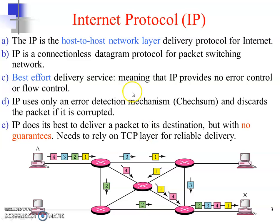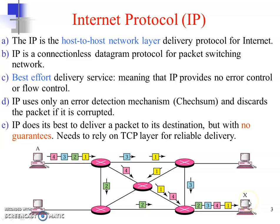Internet protocol is a connectionless datagram protocol which is particularly used for packet switching networks. The datagram approach consists of various packets which are travelling and taking different routes so that they can reach their destination. At the destination they will be gathered and arranged in sequence, so that even if the first packet reaches last, they will be rearranged at the other end. This approach is called the datagram approach.